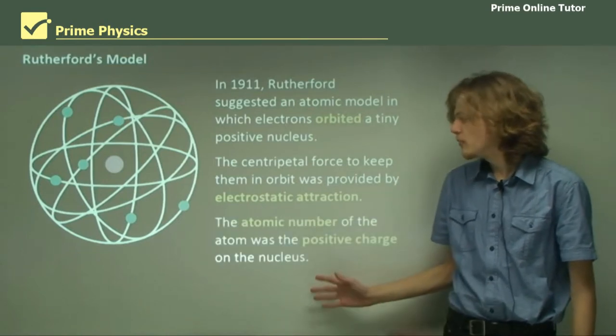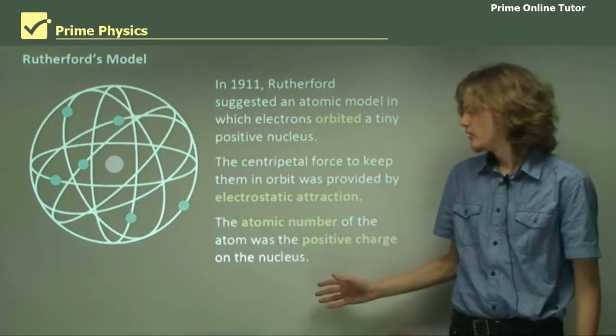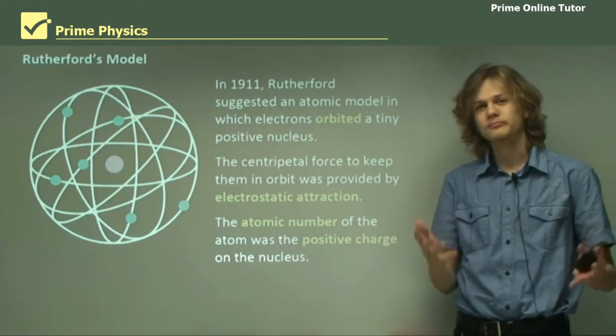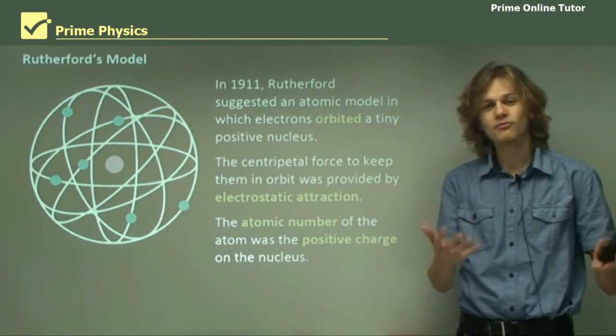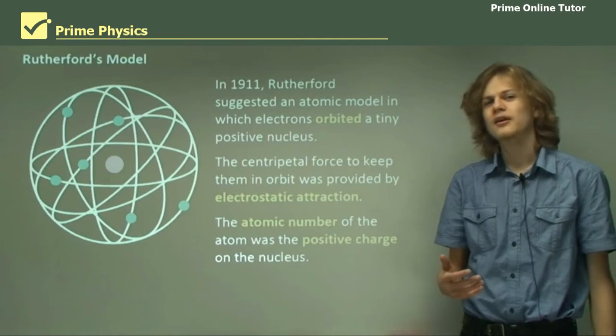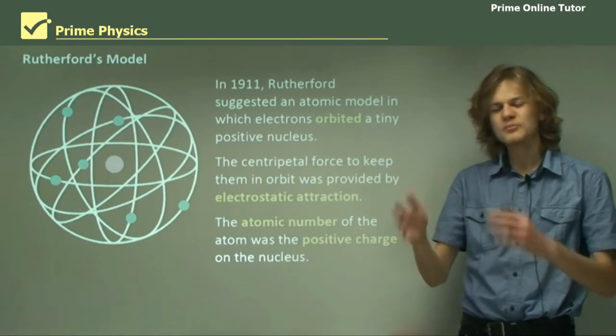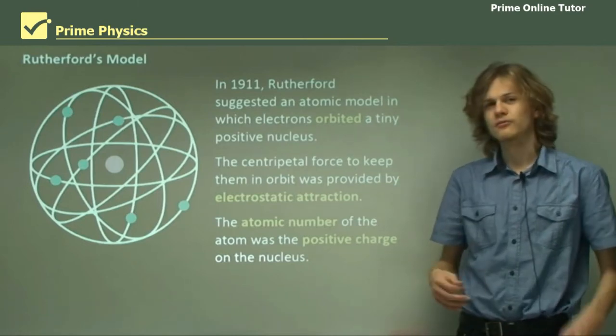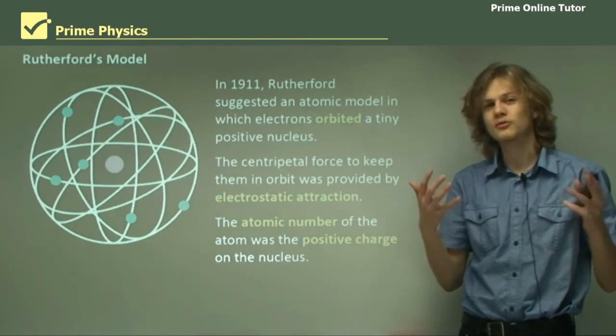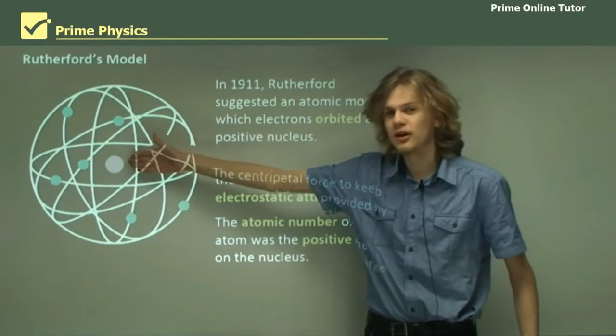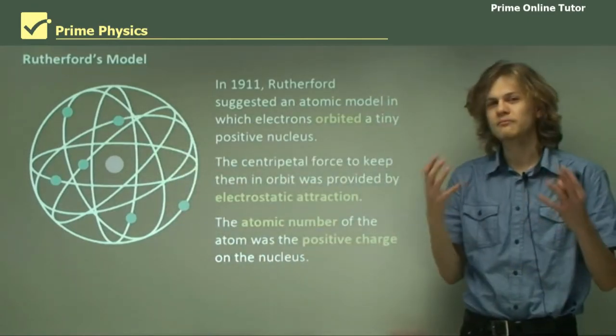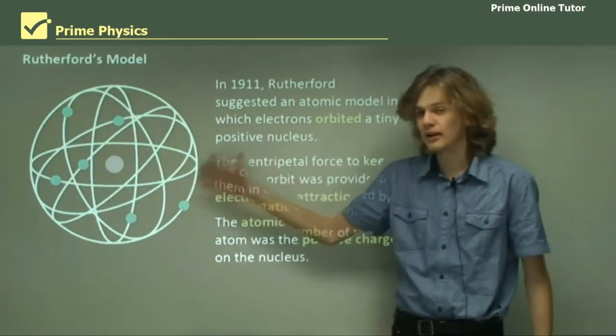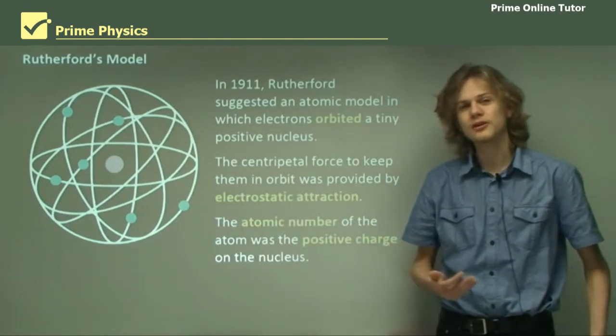The atomic number of the atom was the positive charge on the nucleus. This was a great step forward that Rutherford's model made, because it couldn't really be explained very well by other models. It means that for carbon, for example, which has an atomic number of six, that would be the positive charge on the nucleus here. And to make the atom neutral, you would also have six electrons orbiting the nucleus.